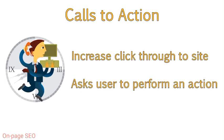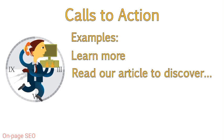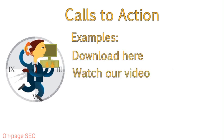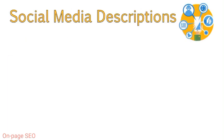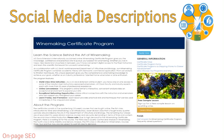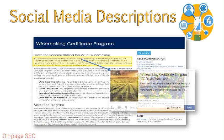A call to action basically requests the user to perform a specific action, such as visiting your page. When website visitors are faced with calls to action telling them exactly what you want them to do, they are more inclined to take that action. Including words like 'learn more,' 'read our article to discover,' 'find out,' 'download here,' or 'watch our video' can help get that visit. Another great reason to optimize this area is that social networks use this as a description of the page when you or another user posts that page's link to a social network. When you don't have a meta description, social media sites will choose their own text — usually just the first text seen on the page, which may not be catchy or memorable. Also note that social media sites will also pull in the title, which is another reason to optimize that area.